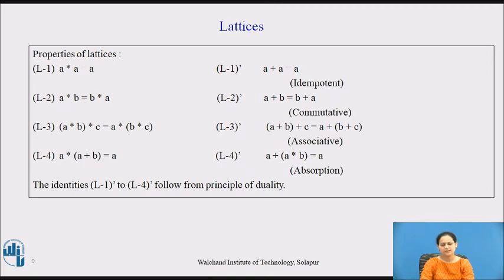So these are the four main properties which lattices hold: idempotent, commutative, associative, and absorption, with their usual meanings as we have already learned in earlier theories.